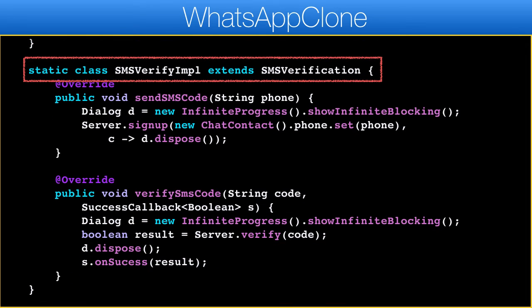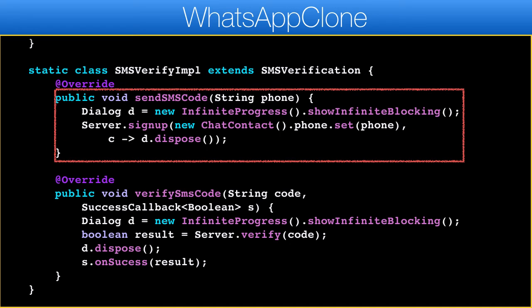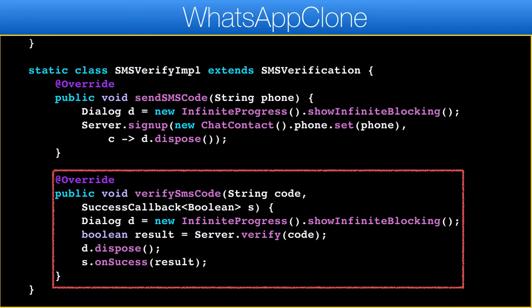The SMS verification class is an abstract class from the SMS verification CN1Lib. It lets us move some of the functionality of that library into the server. The first method is the send SMS code method, which sends an SMS message to the given phone number. On the server it invokes the signup call, which triggers an SMS to that phone number. When the user types in or the system intercepts a phone number, this callback is invoked, and it sends the verification string to the server side and returns the result based on that.